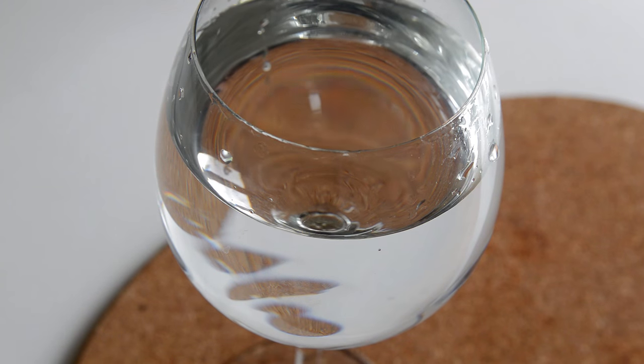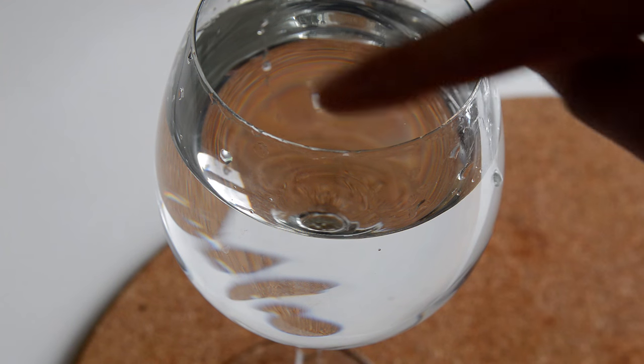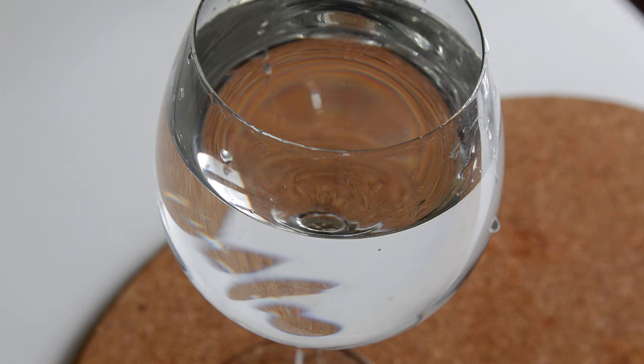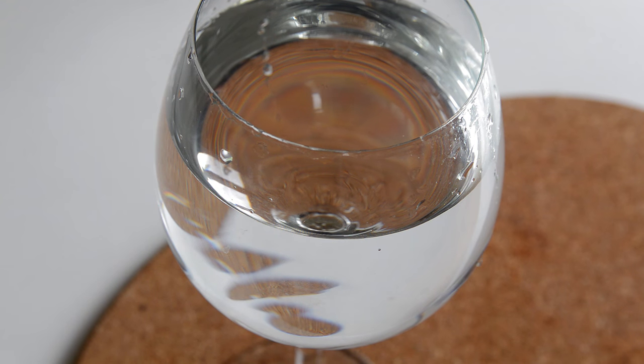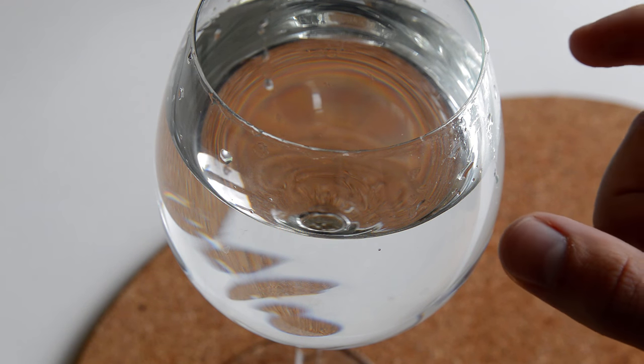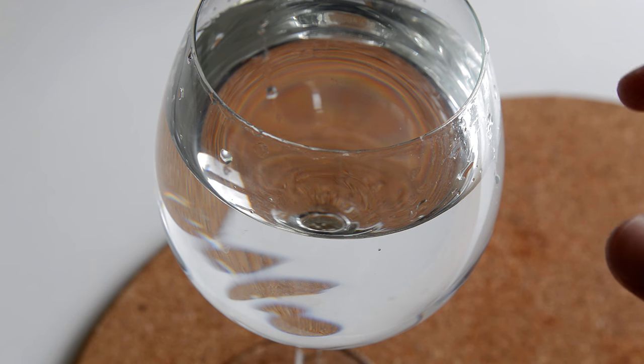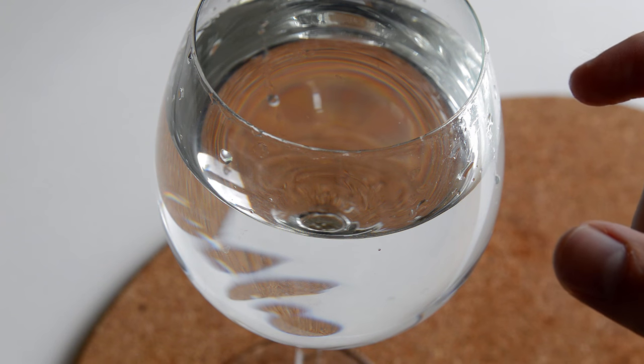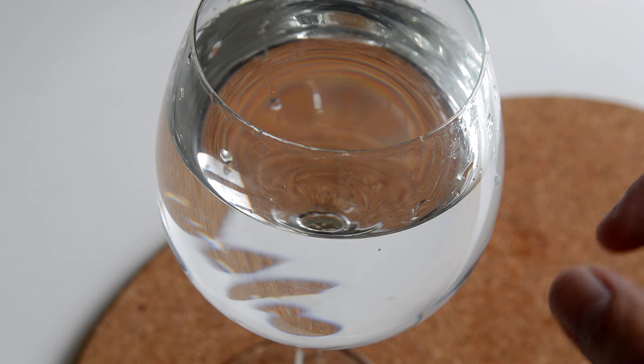It's also interesting to note is that where we have the biggest vibrations and the lowest vibrations seems to move around in a circular pattern with my finger. These areas where we have no vibration are called nodes, and due to the standing wave being set up on the surface, these nodes are where you get destructive interference.